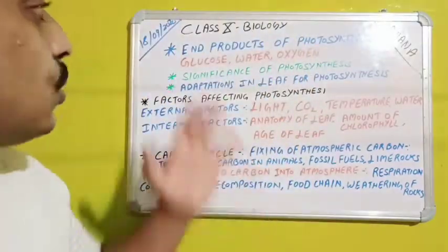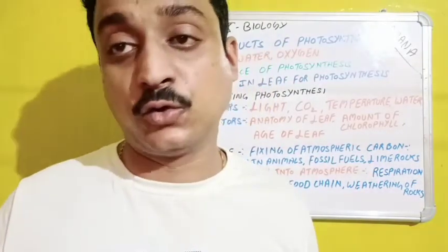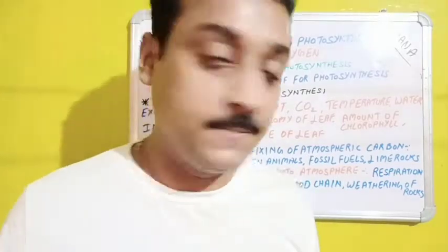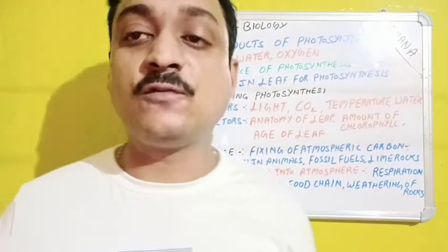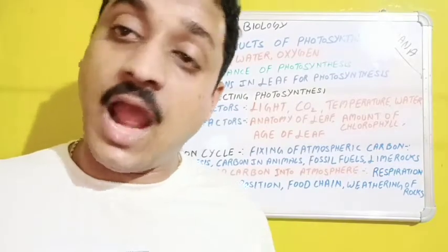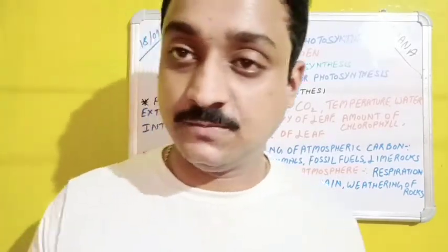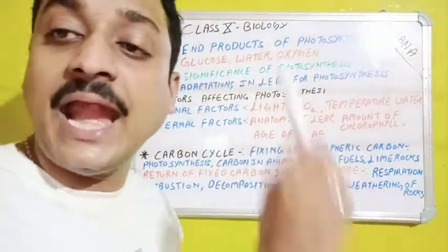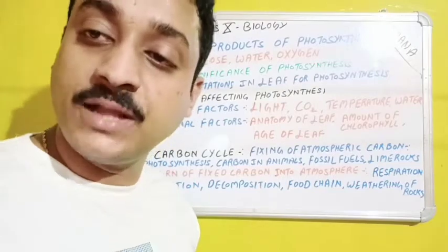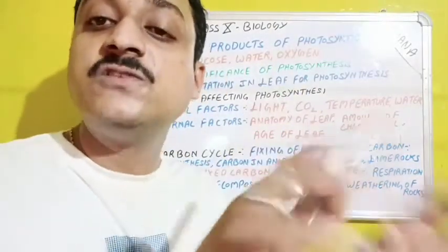The second end product is water. Whatever water is produced will be used again in the next cycle of photosynthesis. The third end product is oxygen — the main by-product of photosynthesis. Once produced, oxygen is released into the air and utilized by animals for their respiration and breathing. So glucose, water, and oxygen are the three main end products of photosynthesis.